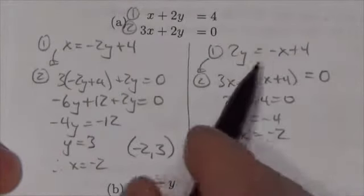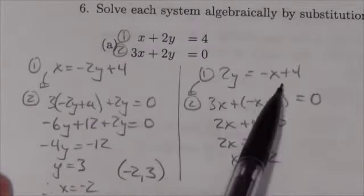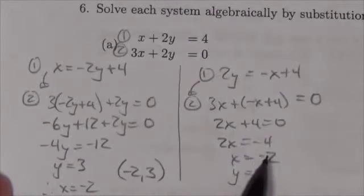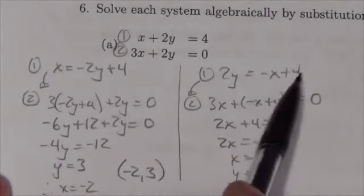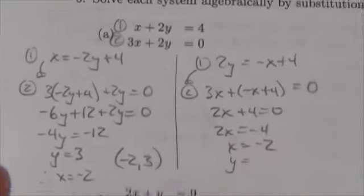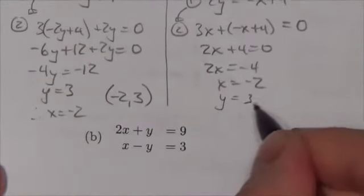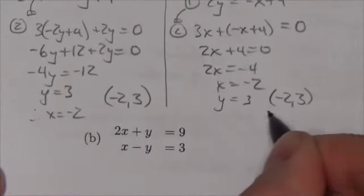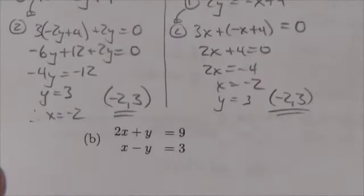If I plug that negative 2 back up to here, it's going to be a little more complicated to solve for y, but only a little bit. Negative of negative 2 is positive 2 plus 4 is 6, then divide by 2 is 3. So y equals 3. The point we get once again is negative 2, 3.